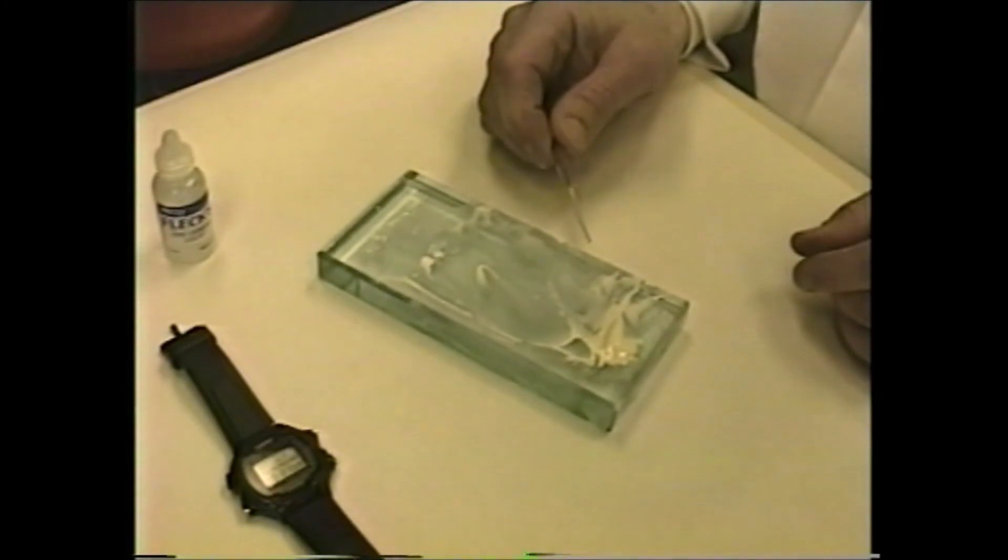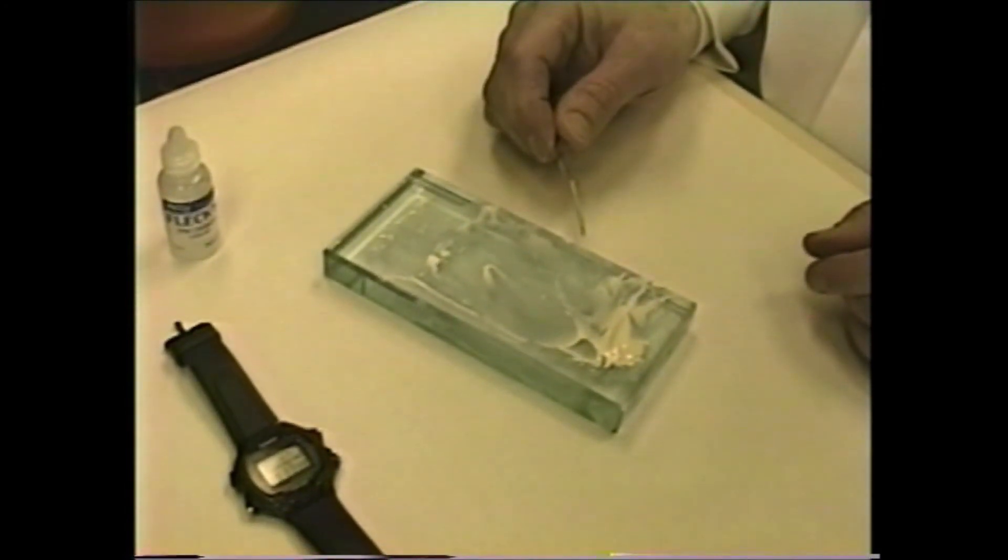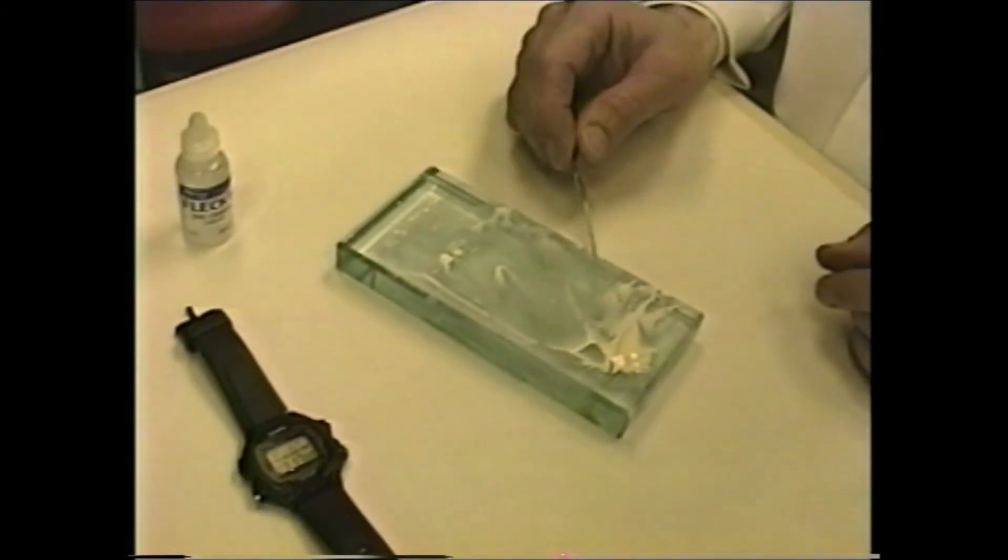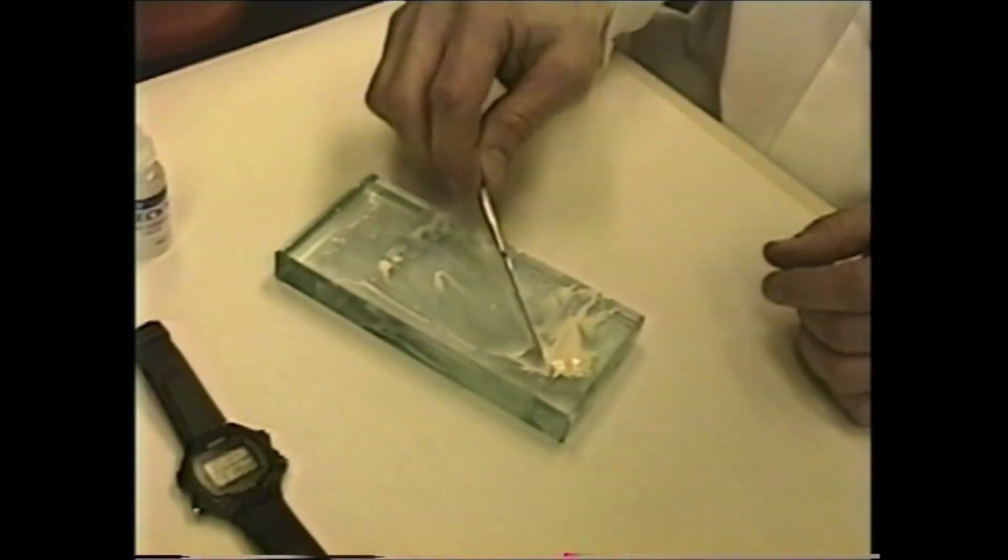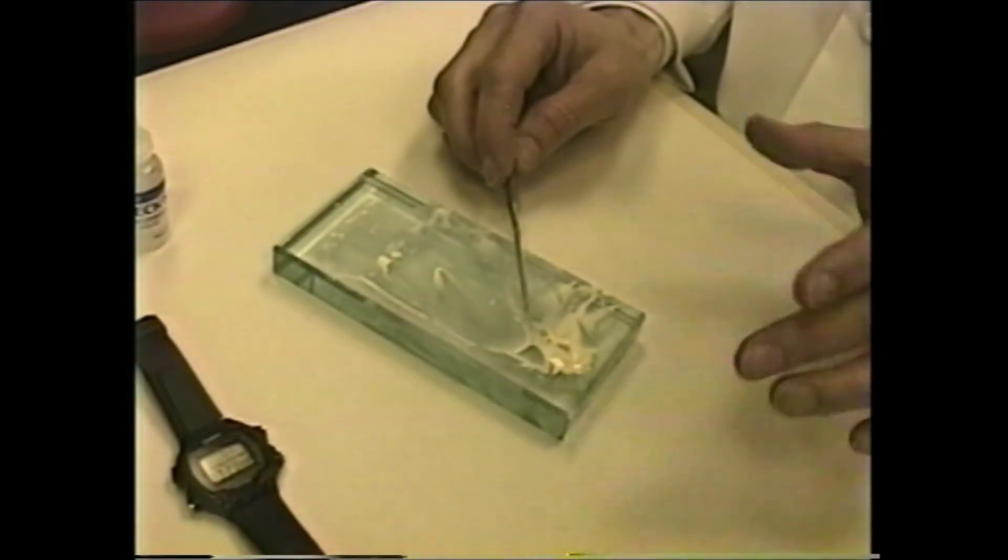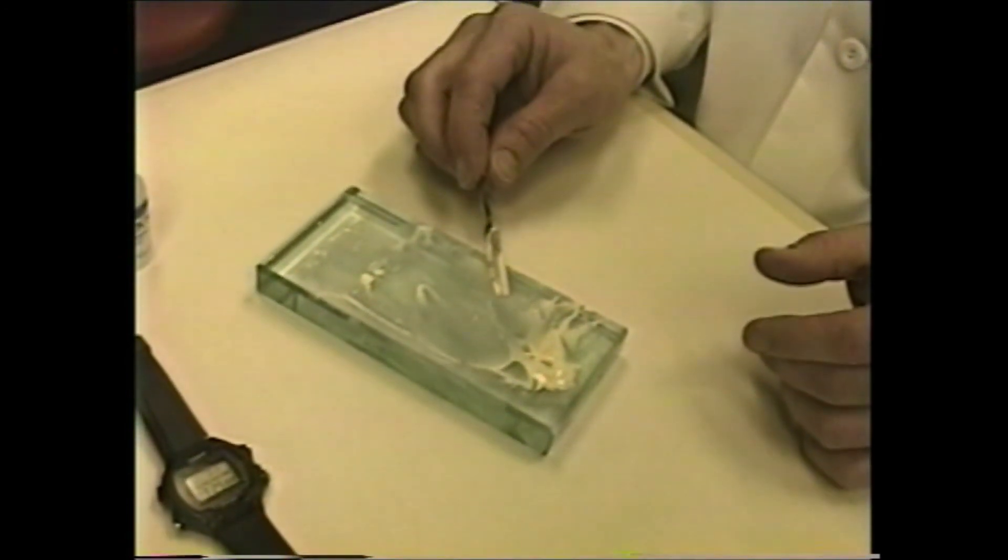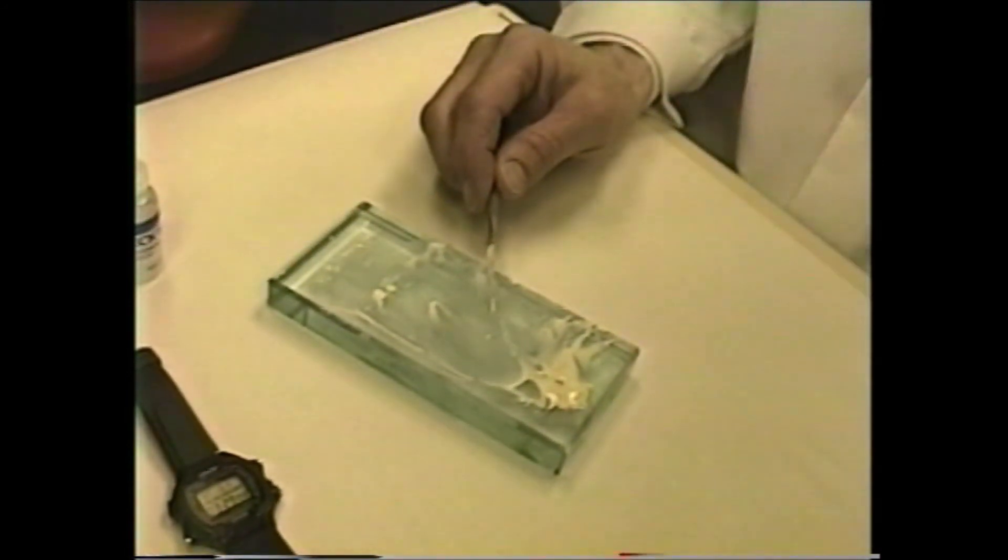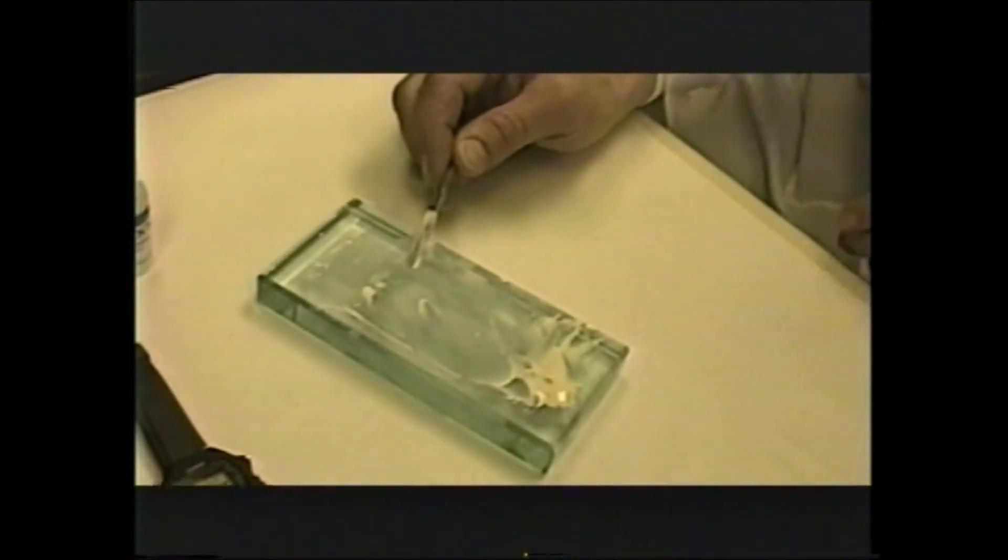One thing that's important is the proper cleanup. You can note the syllabus instructions for that. One thing you do want to do after the crown has been loaded and you proceed with cementation is place the cement slab along with the mixing instruments in water. Typically, it will clean up nicely in water.